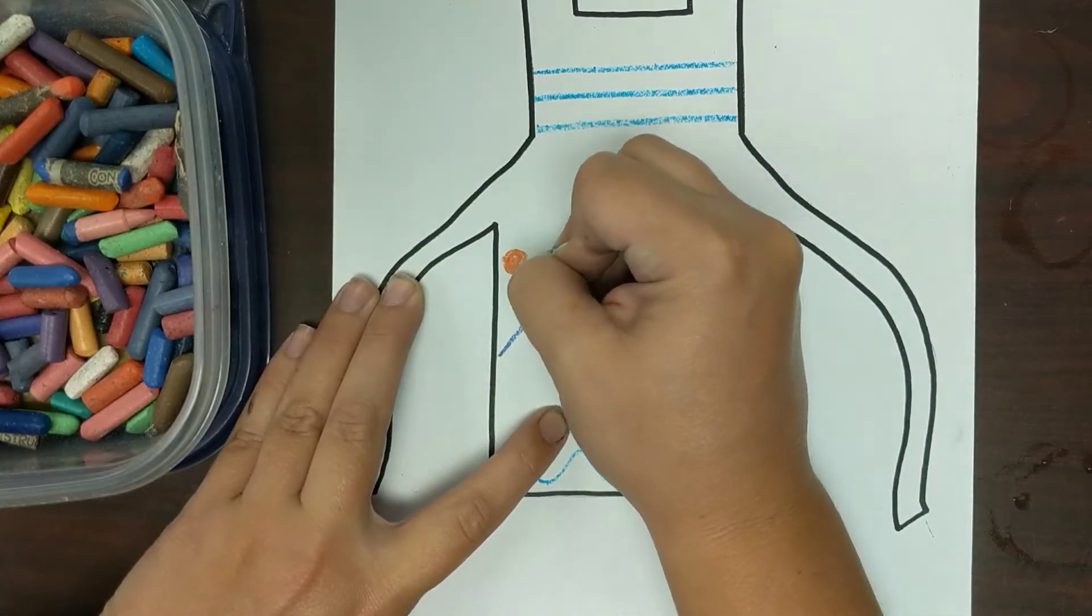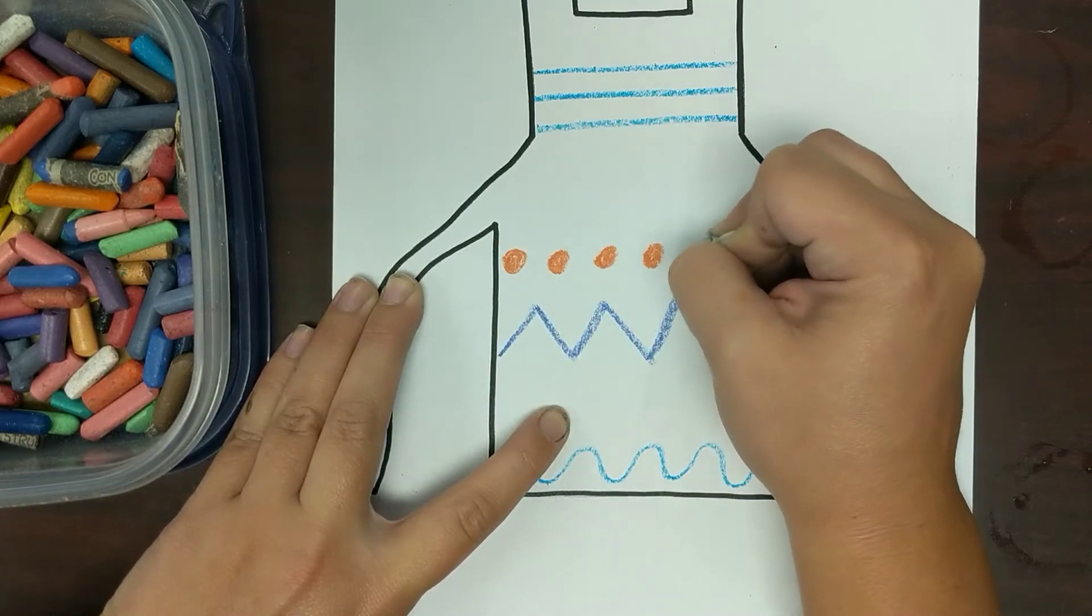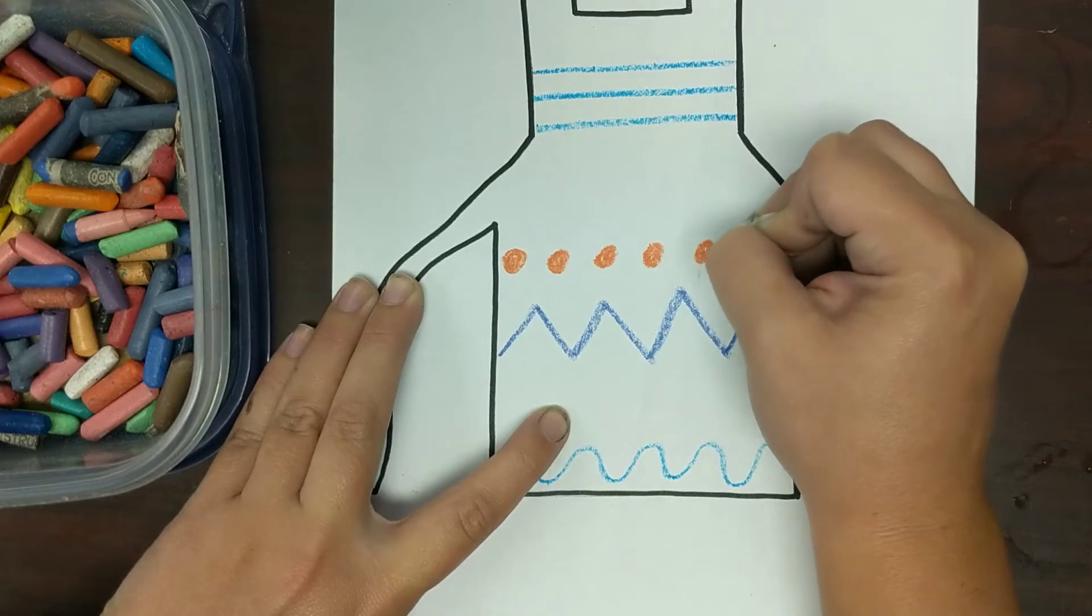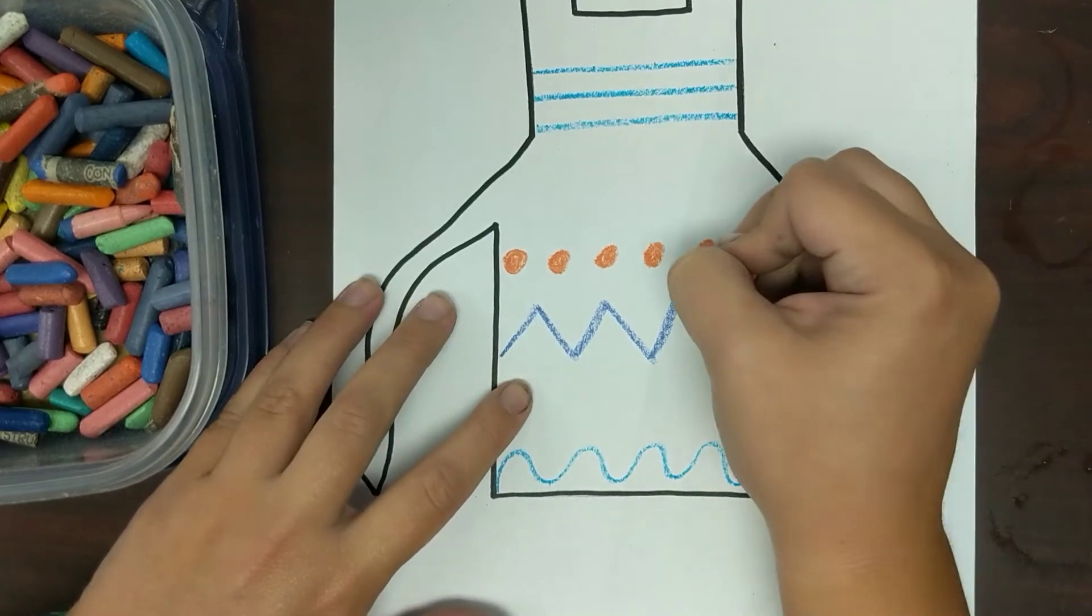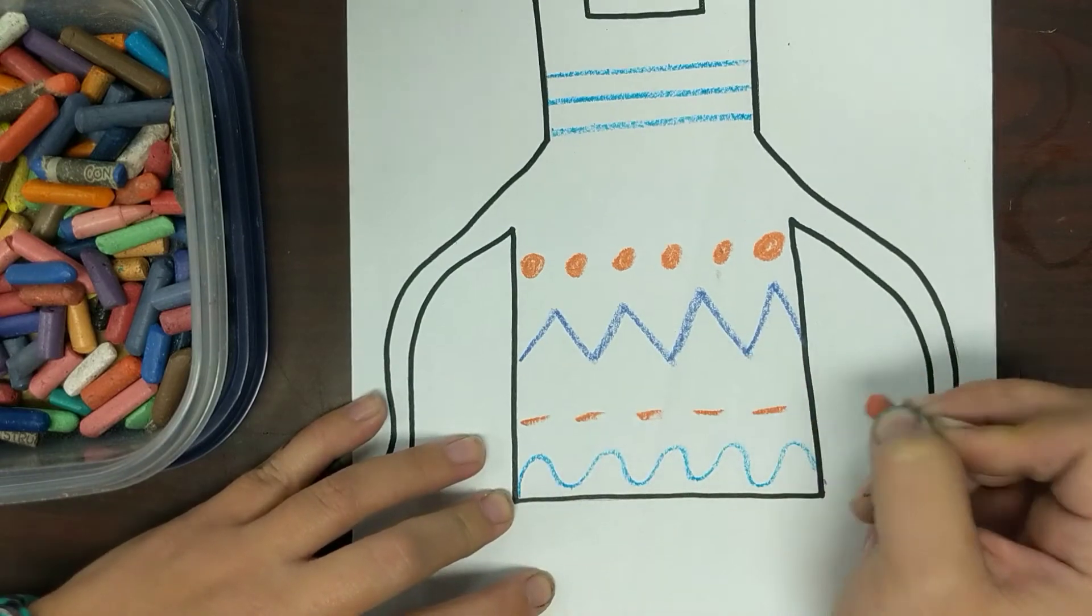A dotted line, like this. So dots that go straight across. Or you can do a dash line. So that's just some little dashes that go straight across. Alright, so you need at least four of those types of lines.